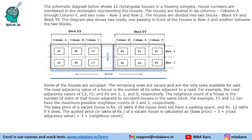Hello everyone, welcome to Aptitude JAV. This set is from CAT 2023, Slot 1, DILR. It says that the schematic diagram below shows 12 rectangular houses in a housing complex. House numbers are mentioned in the rectangles representing the houses. The houses are located in 6 columns, column A through column F, and 2 rows, row 1 and row 2. The houses are divided into 2 blocks, block X and block Y. The diagram also shows 2 roads — one passing in front of the houses in row 2 and another between the 2 blocks.